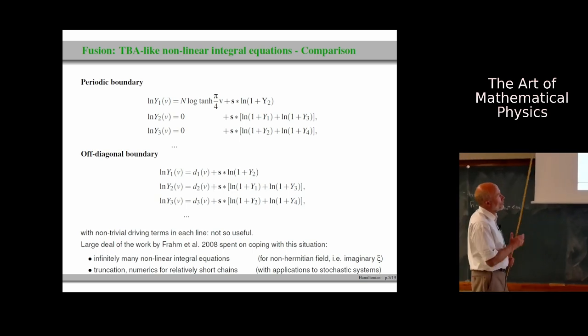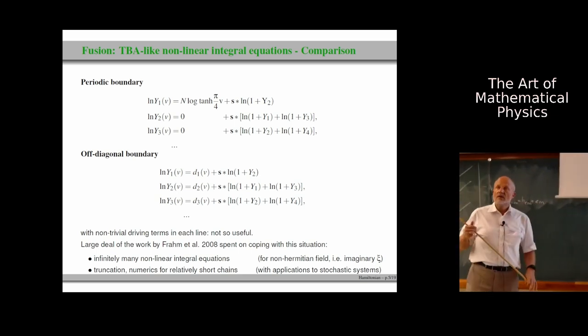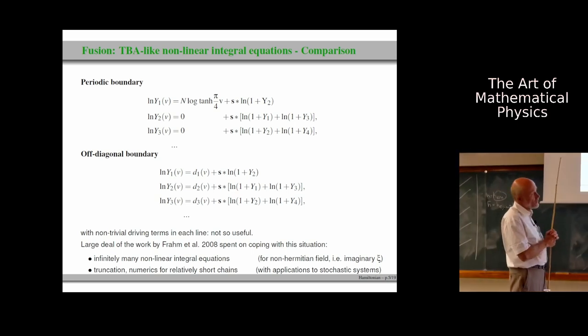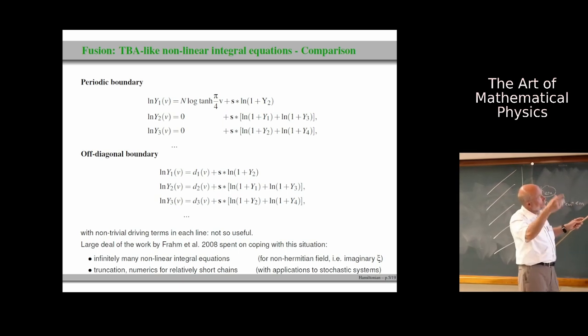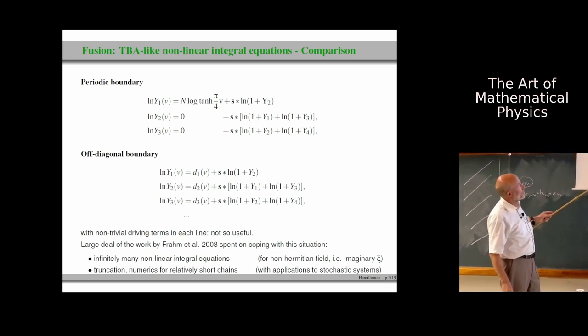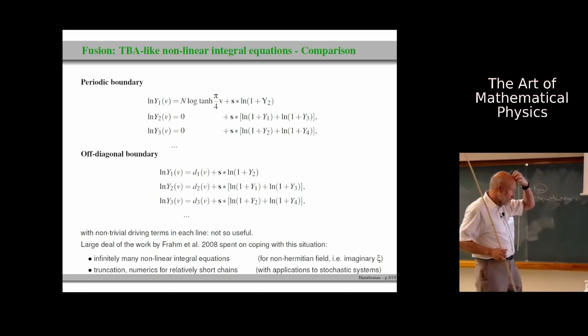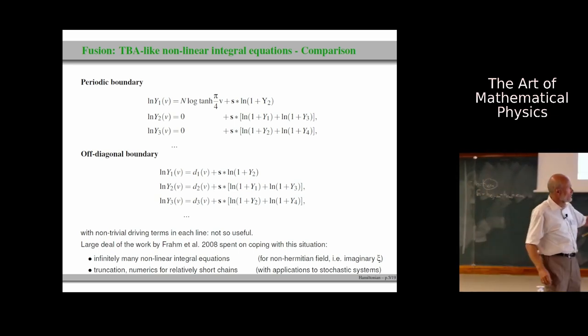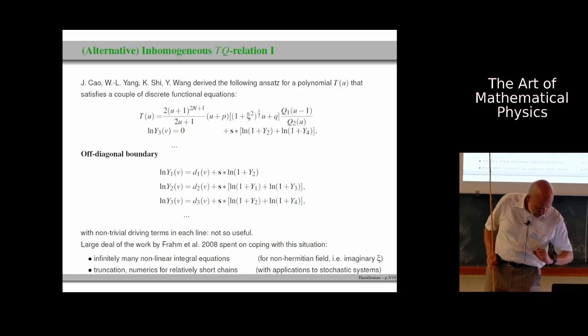For the off-diagonal boundary case, the algebraic part, or let's say the interesting part is still the same, but the driving terms are non-trivial in all of these lines. So all of the driving terms are non-zero. And therefore, one has to deal with infinitely many of these equations. And that's why this fusion and Y-system approach is not so useful in general. But still, Fram and collaborators applied this method and used truncations of these equations for the case of non-hermitian boundary fields, or at least imaginary values of xi, and obtain results from that in a stochastic setting.